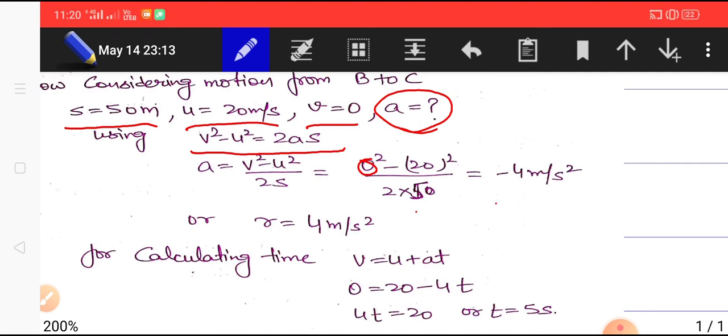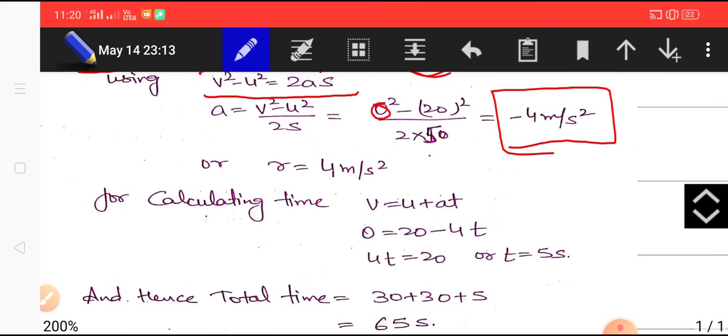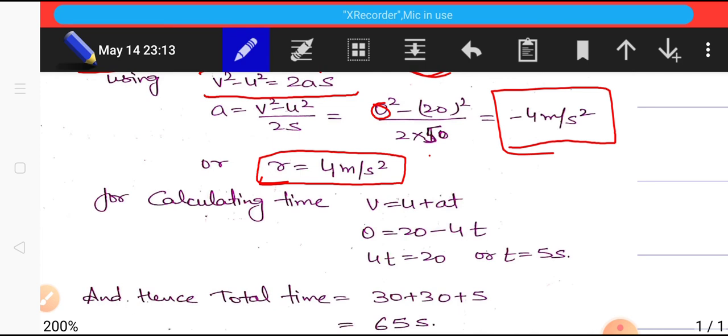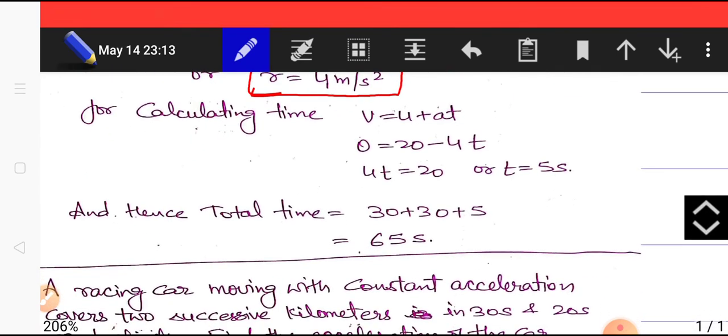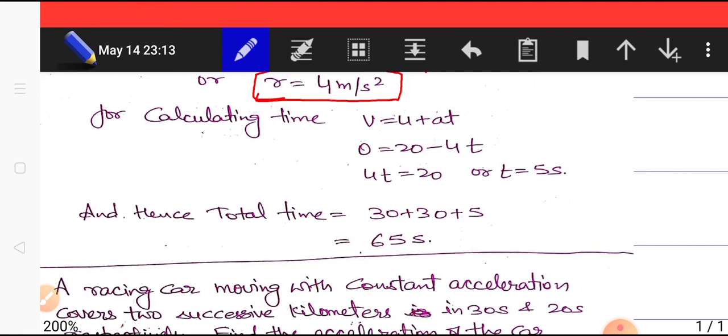One more point here: if you are saying acceleration is -4, it means retardation is +4. Whenever we mention acceleration or retardation, we mention them with that change in sign. For calculating time, we apply the equation v = u + at. We know that v = 0, u is 20 for B to C motion, and a is -4 meter per second square. We can easily calculate time to be 5 seconds.